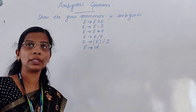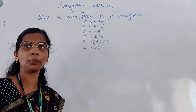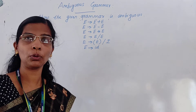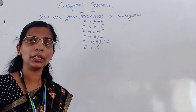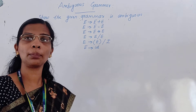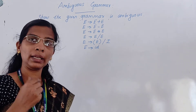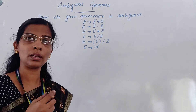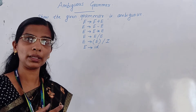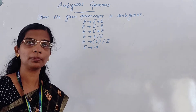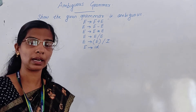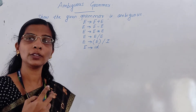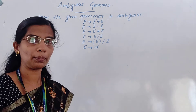Hi students. In this video we will be seeing about ambiguous grammar. In the previous video we have learnt designing context-free grammar and we have learnt about derivation and parse tree. Coming to ambiguous grammar: what is ambiguous grammar? From the grammar, take any string, and if you could generate two different parse trees for the same string, the given grammar is ambiguous grammar. So in a grammar, at least for one string, if I could generate two different parse trees, the grammar is ambiguous grammar.